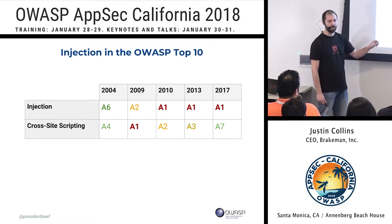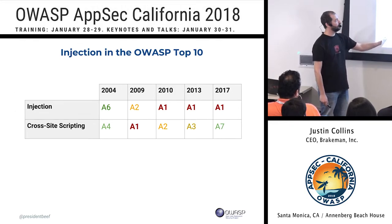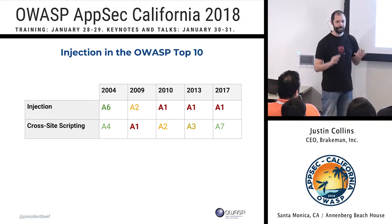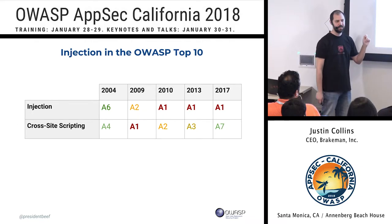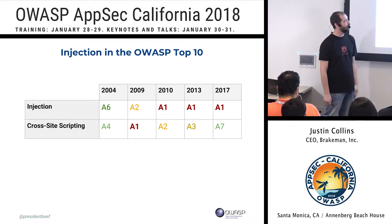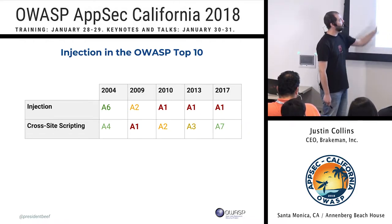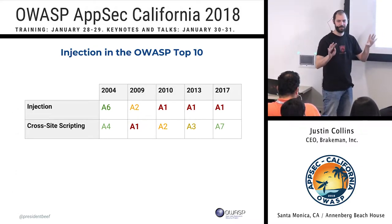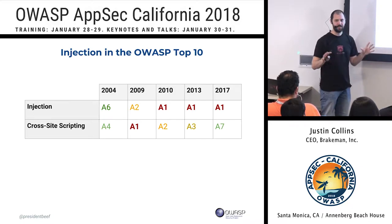They've both been on the list since 2004. Injection started kind of low and then jumped up to number two in 2009, and since 2010 it's been the number one spot. SQL injection has been known since 1998 and has been at the top of the OWASP Top 10 for about eight years. Cross-site scripting has bounced around but put those two together — that's 20% of the OWASP Top 10 that is essentially injection.